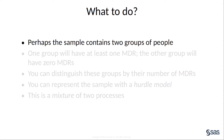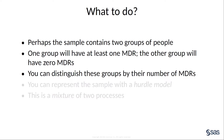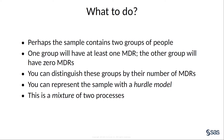Maybe you can think of these data as being generated by two underlying groups of people. One of these groups will have at least one MDR, and the other group will have zero MDRs — think of them as these 'sometimes' and 'never' groups. There is nothing hidden about these groups; you can identify them by their number of MDRs. What you can do is model this sample with a hurdle model. An individual must get over some hurdle before registering at least one MDR. This hurdle model is a mixture of two processes: one that generates non-zero counts and the other that generates only zero counts.